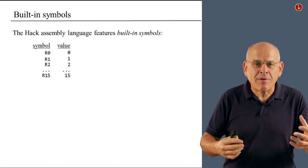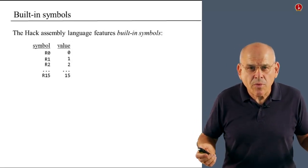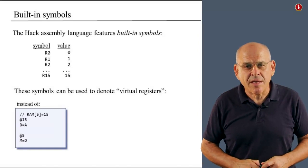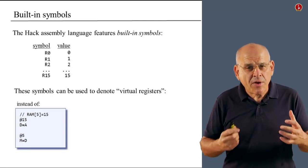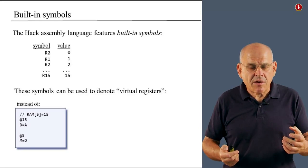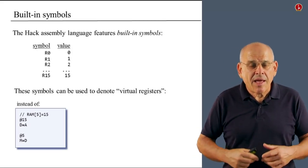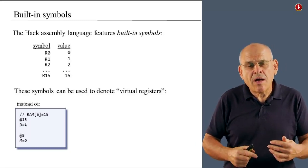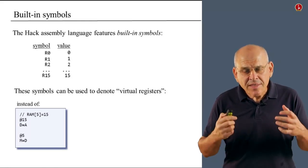And these labels range from R0 to R15. And the contract is such that whenever the assembler or the translator sees a label like R3, it will replace it with a number 3. That's all. So, you may ask yourself, why do we need these fancy labels? Well, here's an example where these labels can come to play. This is a very simple piece of code in which we set RAM 5 to 15. Now, let's read carefully what is going on here. In the first pair of instructions, we use the A register as a data register. We put the number 15 into A, and then we move it into D. In the second pair of instructions, we do something remarkably different. We use the at 5 command to address the memory, to select memory register number 5. And then we do M equals D.